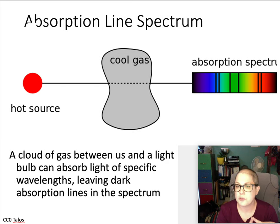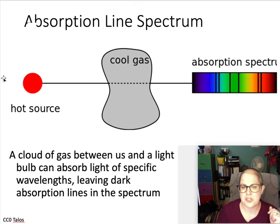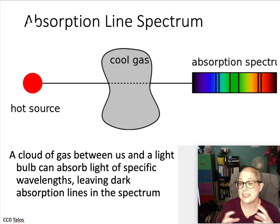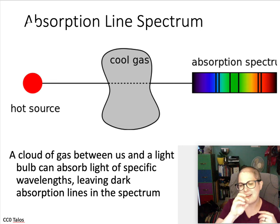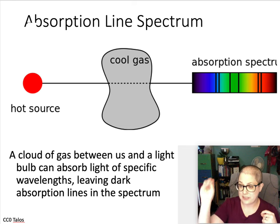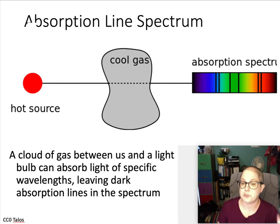Another type is an absorption spectrum — it's like the reverse of the emission spectrum. Again you have gas, but this time it's cooler than the hot light source behind it. The hot source creates a continuous spectrum, the light goes through the cool gas, and when it reaches us some of those colors are missing. The gas has somehow absorbed or blocked those specific wavelengths.